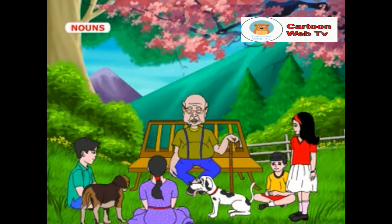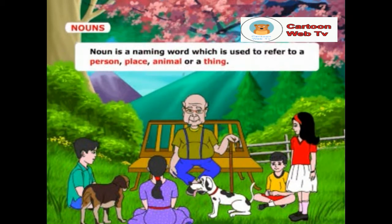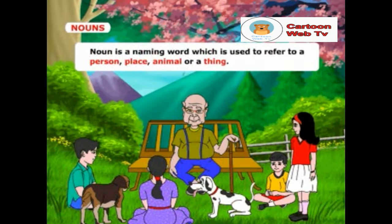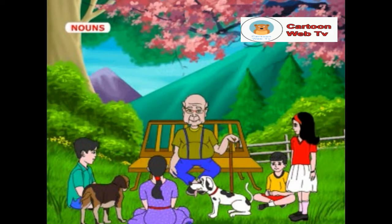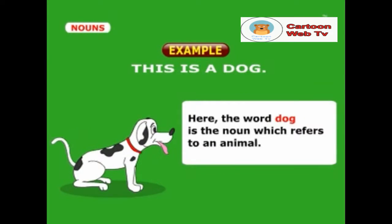Children, can any one of you tell me about noun? Yes, Grandpa. Noun is a naming word which is used to refer to a person, place, animal or a thing. I can explain it with an example. Look at this sentence: 'This is a dog.' Here, the word dog is the noun which refers to an animal.